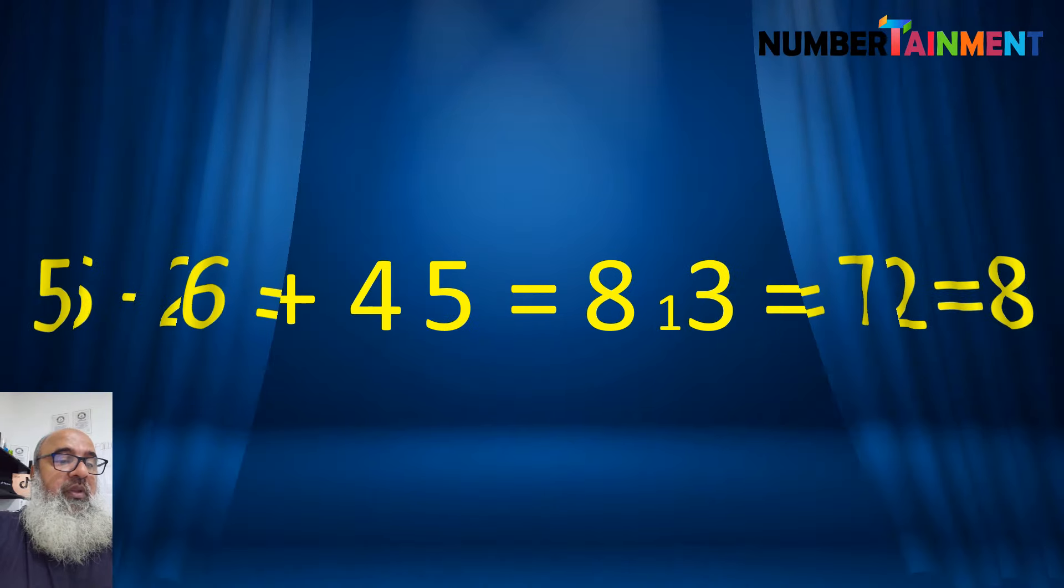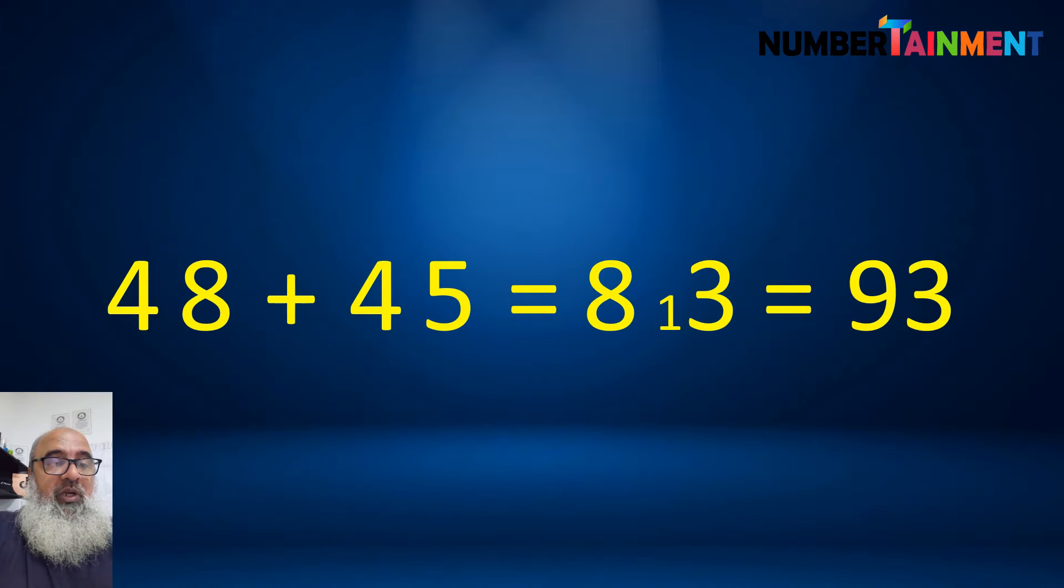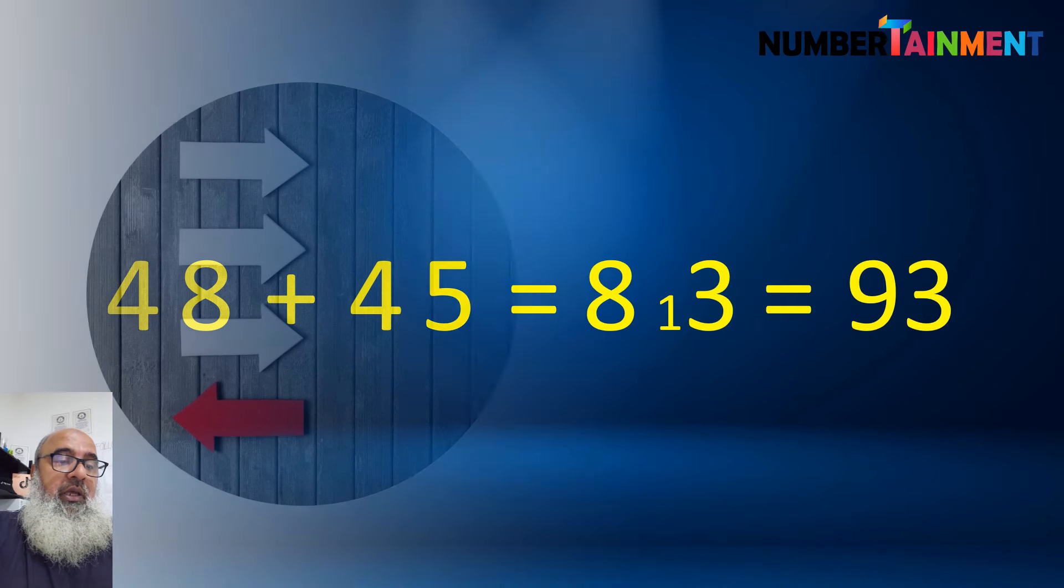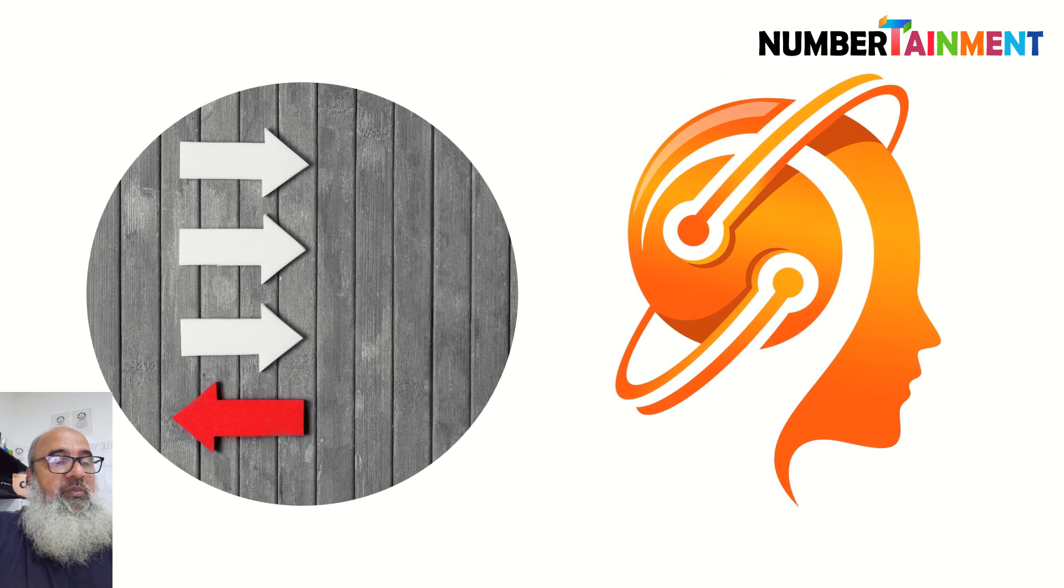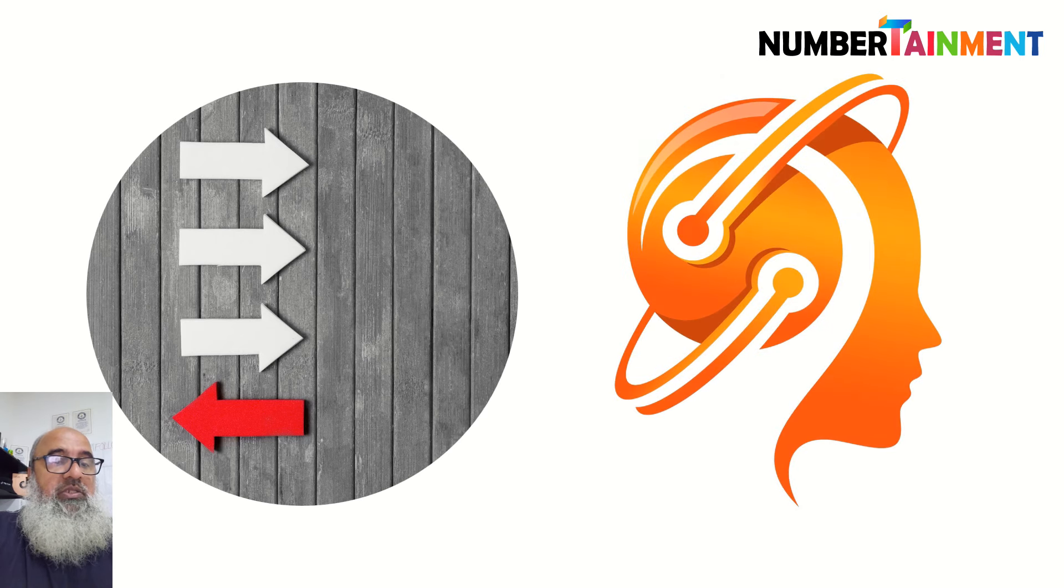Similarly, we can see that 48 plus 45 is equal to 93. Actually, working from left to right has many advantages and it is more natural. So in this course, we will favor this method.